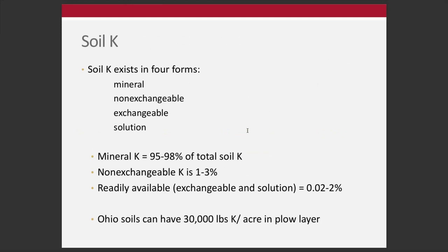Potassium exists in four forms, and like phosphorus, these forms are operationally defined — meaning they are defined by our methods of extracting and quantifying them. The four forms are: mineral, non-exchangeable, exchangeable, and solution. This goes from mineral being the least available to solution being readily available to the plant, decreasing in that list as availability increases.